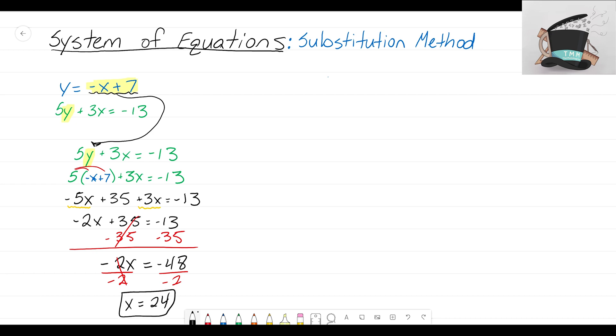So we know what our x value is - the x value in the coordinate will be 24. Now just like with our equal values method, we need to figure out what our y value is. You could use either equation, but one of these equations is a lot easier than the other. I'm talking about the top equation - we want to know what y equals, and this top equation starts off with y equals.